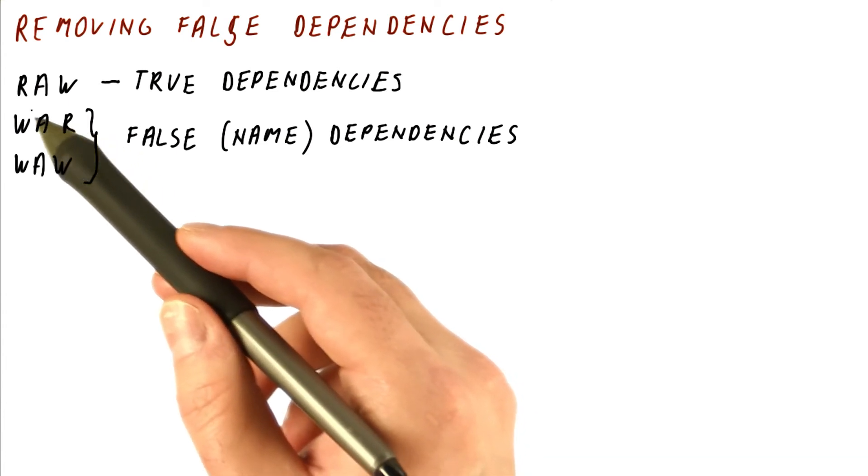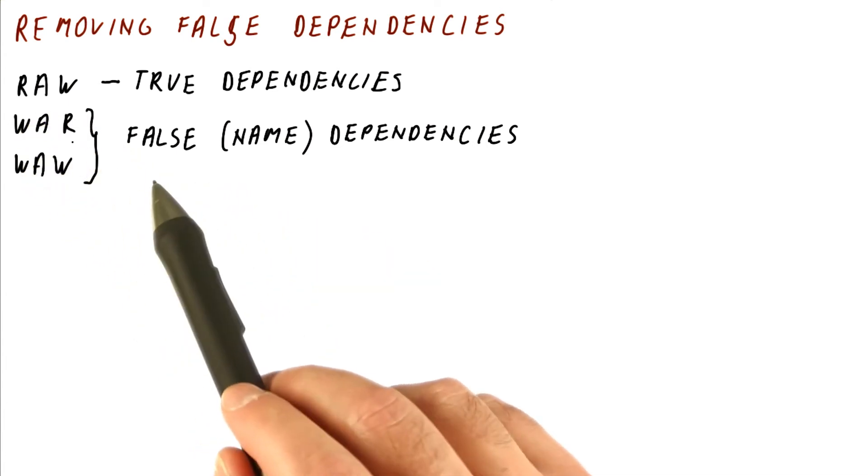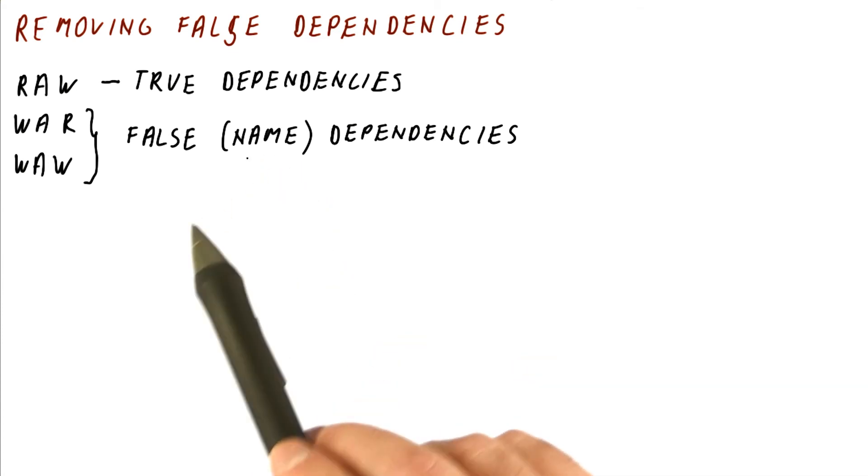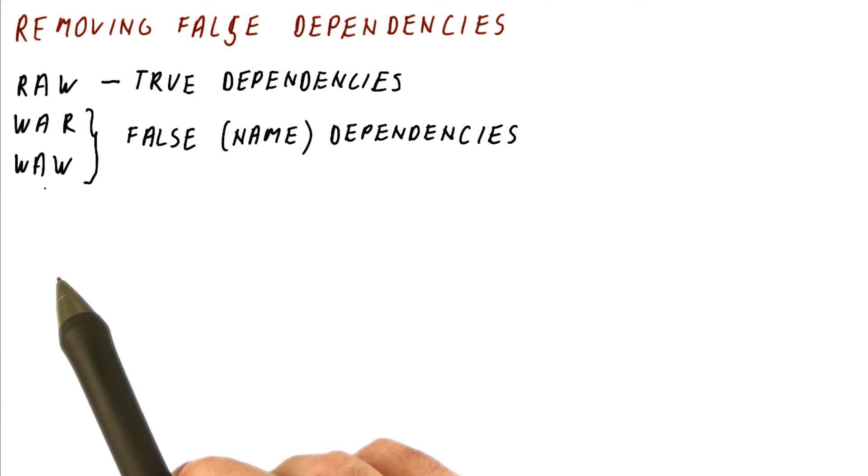Why? Well, because there is nothing fundamental about them. They are dependencies just because we are using the same register for two different results. So for example, in a write after write dependence, we have seen that two different instructions would write to the same register and that creates the write after write dependence.